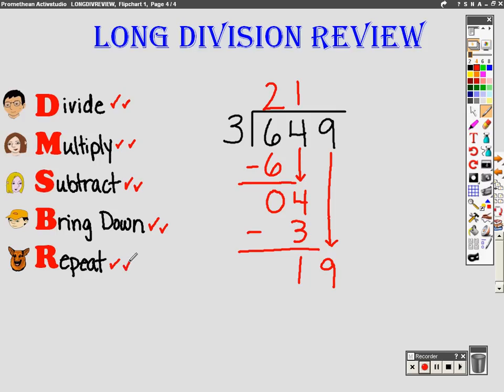So we repeat. Divide again. Three goes into nineteen. How many times? Six. Three times six is eighteen. Nineteen minus eighteen is one.